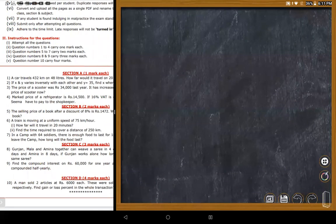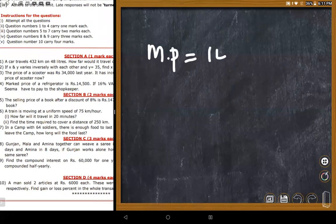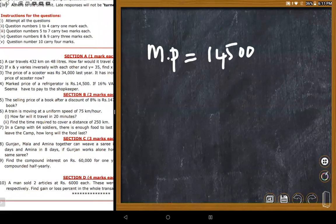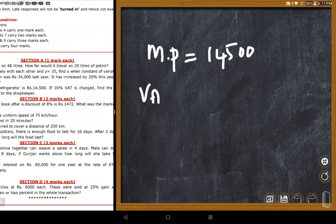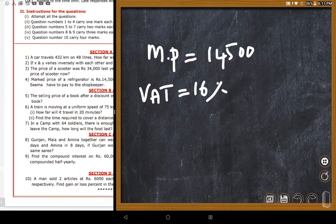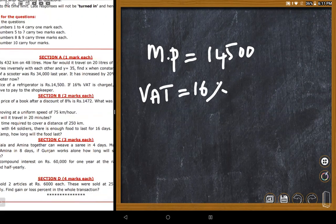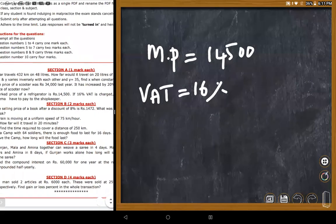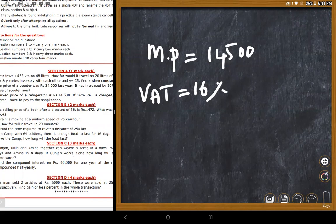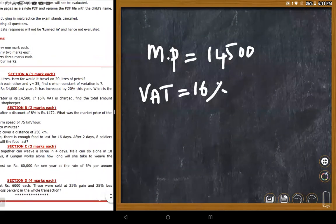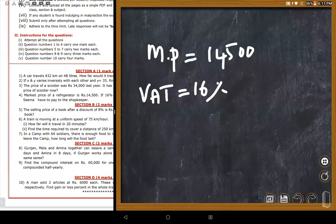The next problem involves VAT: the market price (MP) of a refrigerator is 14,500 rupees and VAT of 16% is charged. Students need to find the total amount to pay. The teacher confirms it is 16% VAT on 14,500 rupees.